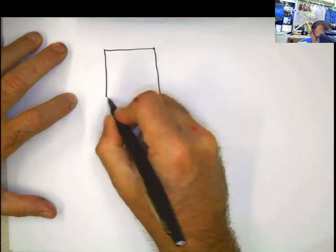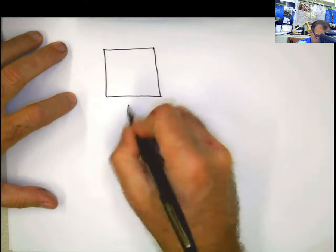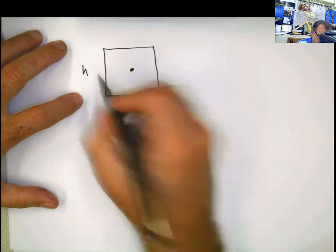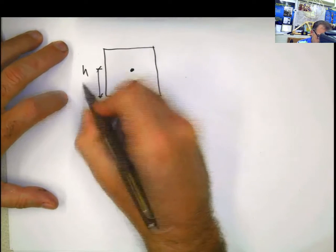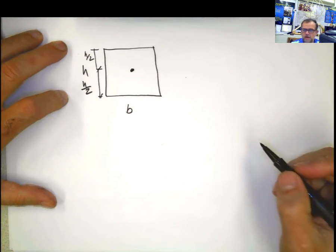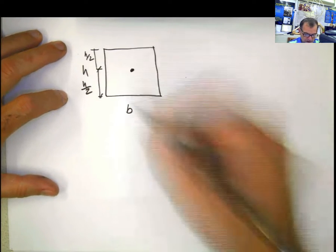If you have a rectangle like this, b h, and the center is located right here, remember this distance is h divided by 2, same as this one, h divided by 2, because the center is located at the geometrical center of this figure.